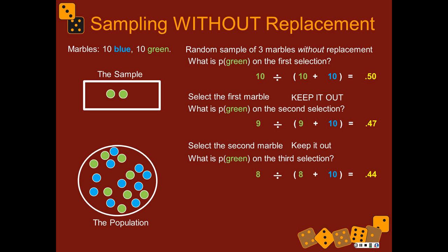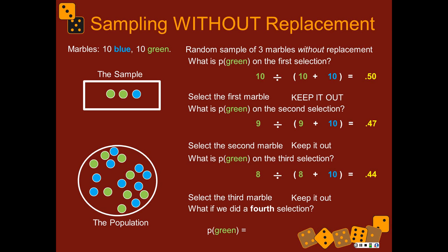You can work through all the complications, but this is important to understand. Sampling without replacement is a dependent set of processes. Each sample is dependent on what happened in the samples before it. The probabilities of getting certain things in each sample have been changed depending on the exact way that the previous sampling happened. If we did a fourth selection, the probability of green would be eight divided by eight plus nine — 0.47 — because the third one was blue, so things evened out a little.